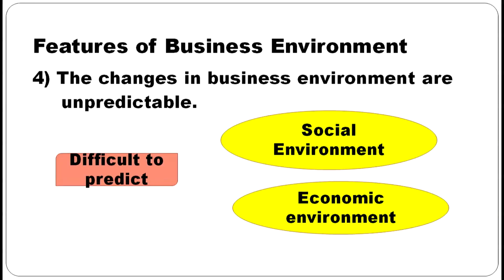We cannot predict the changes in the business environment — it is very difficult to predict. For example, before 10 years, we never thought that people in India would use mobile phones at the pace we use them now. In earlier days, we had only a government-controlled telephonic system and it was very difficult to access long-distance calls. Because of new invention and societal adoption, demand increased, prices came down, and society started using mobile phones at a fast rate.